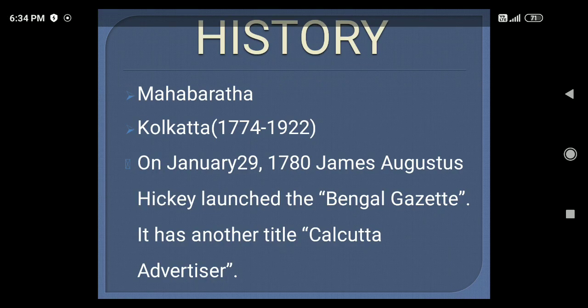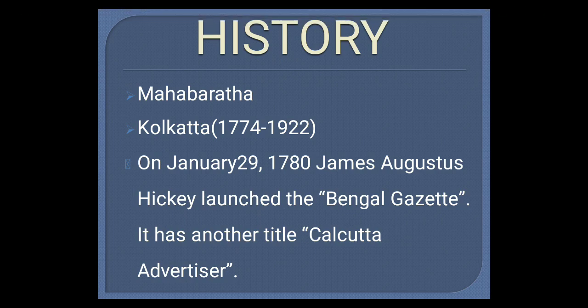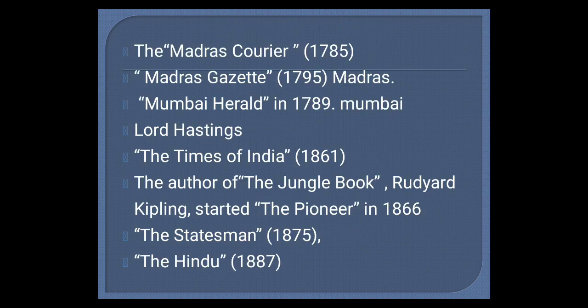If you take the history of journalism, people say that the introduction of journalism traces back to the period of Mahabharata. In India, it was launched in 1780 by James Augustus. It is another title called Calcutta Advertiser. These are some of the journals that were published after the Calcutta Advertiser.